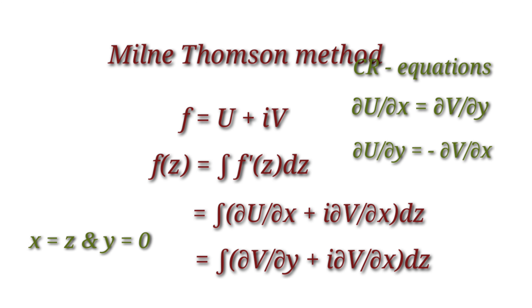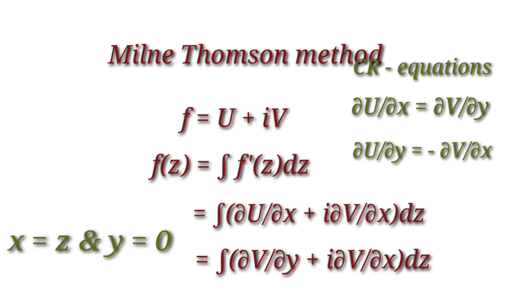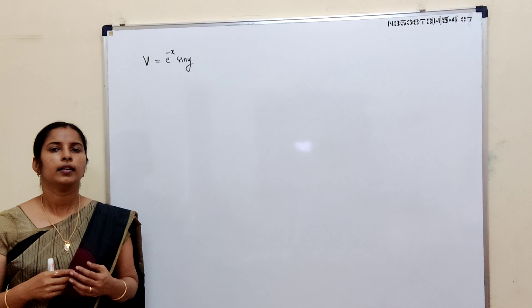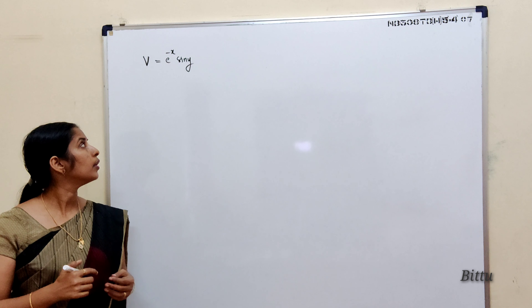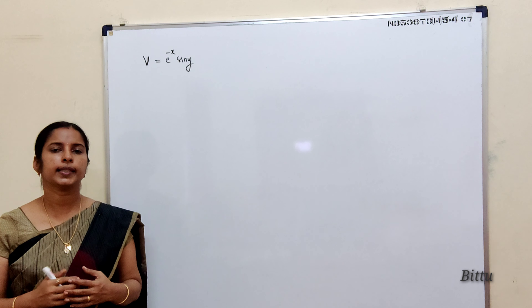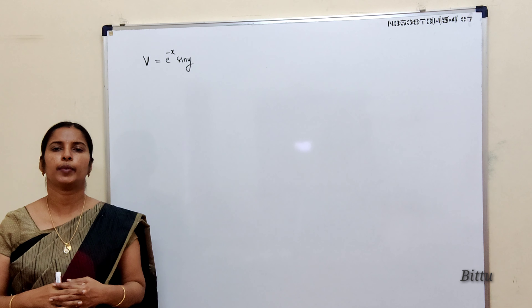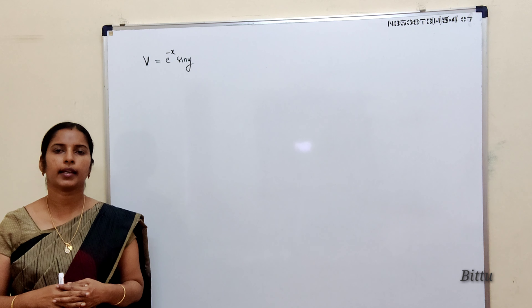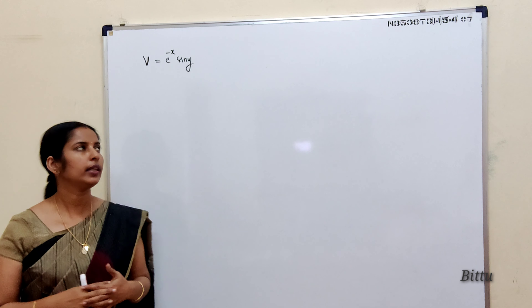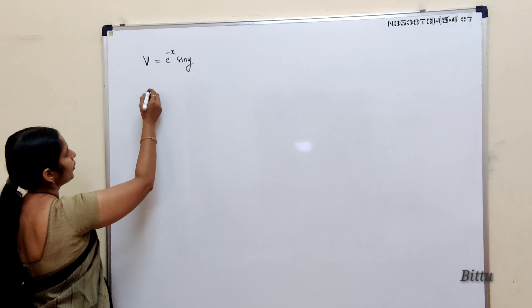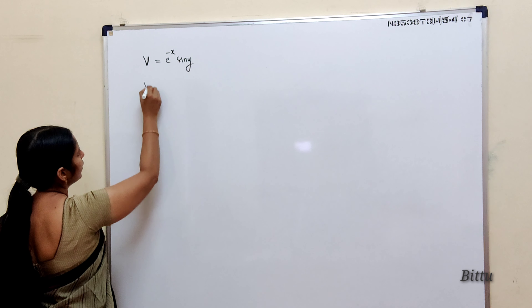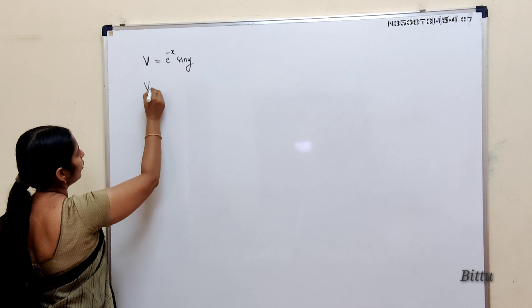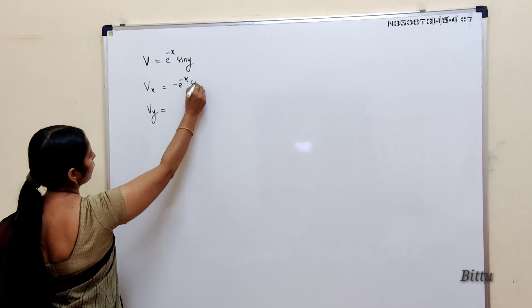Let me find an analytic function by the Milne-Thomson method. Find an analytic function whose imaginary part is e^(−x) sin(y). Here v is given. So we find ∂v/∂x and ∂v/∂y. That is v_x = −e^(−x) sin(y).